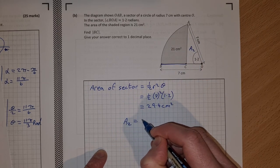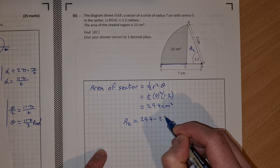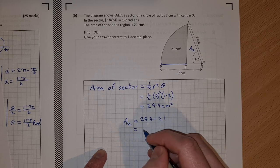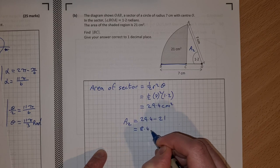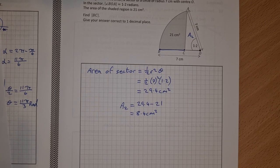A2 is equal to 29.4 minus 21. A2 is going to be equal to 8.4 square centimetres. So I have the area of this, which is a triangle.